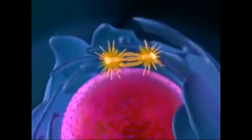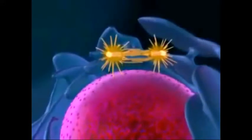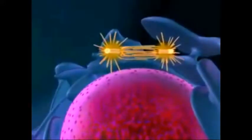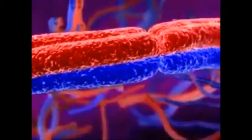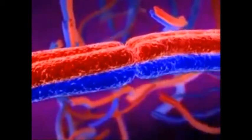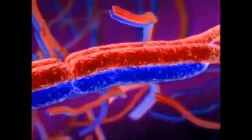A spindle forms and duplicated centrosomes start to migrate toward opposite poles of the cell. Back in the nucleus, the chromosomes are condensing. In meiosis, homologous chromosomes stick together in pairs. The close association of homologous chromosomes allows segments of non-sister chromatids to trade places.